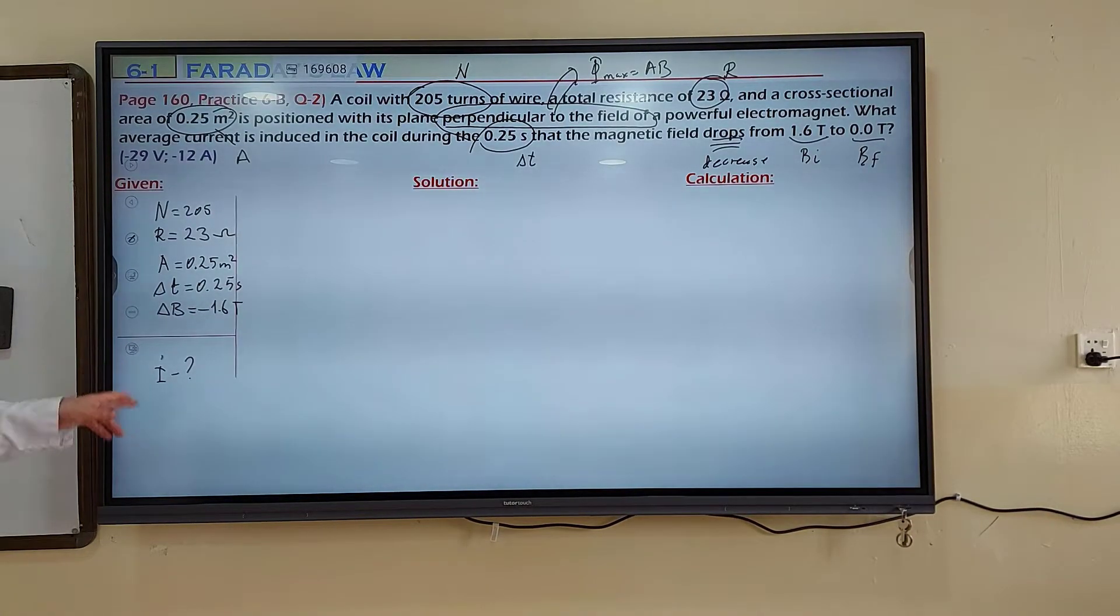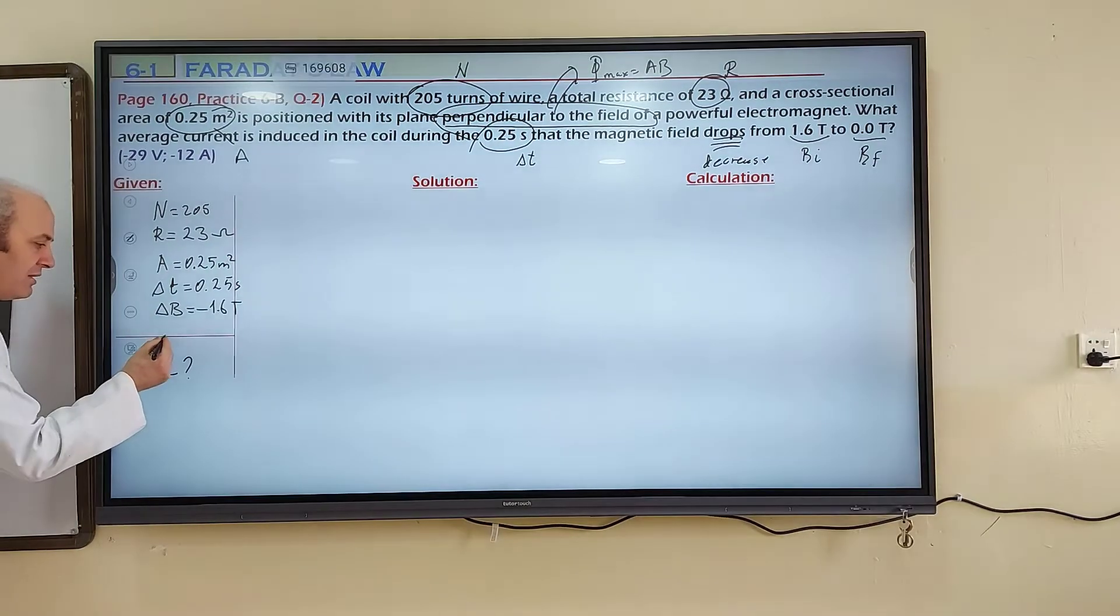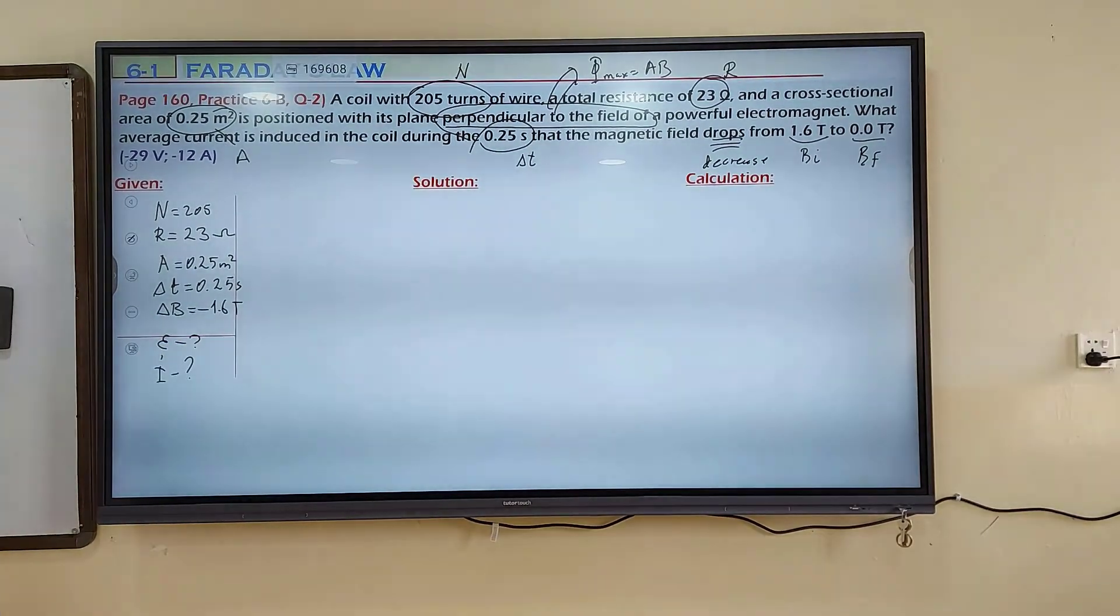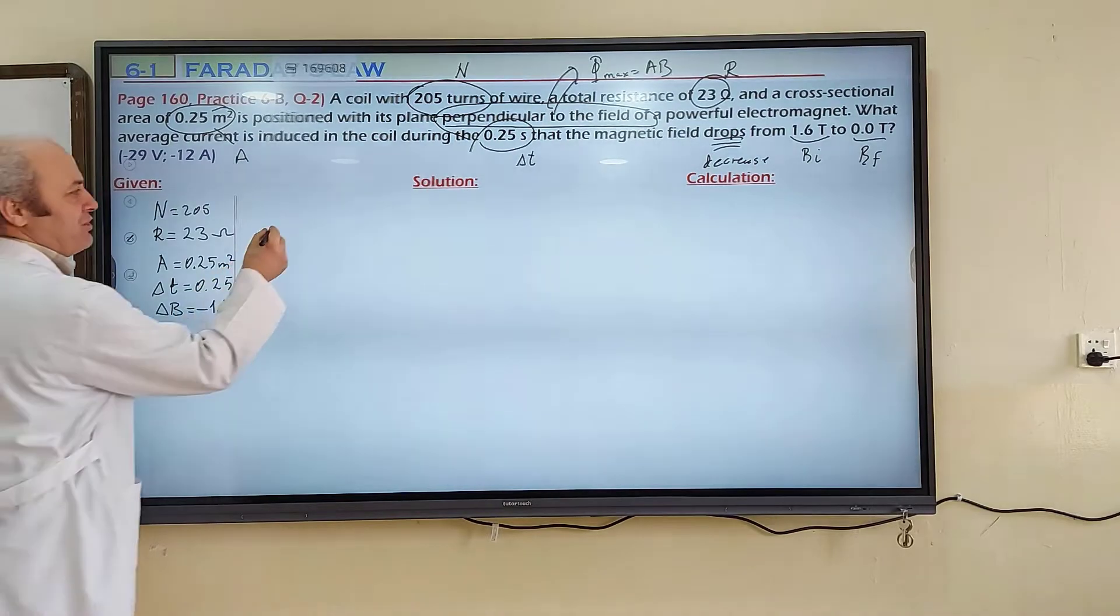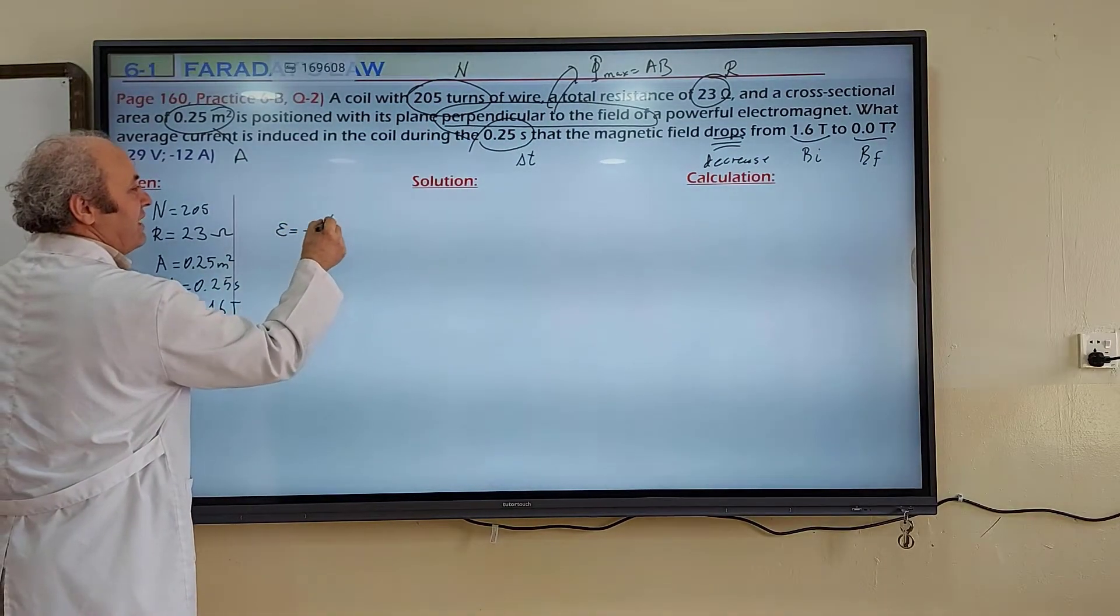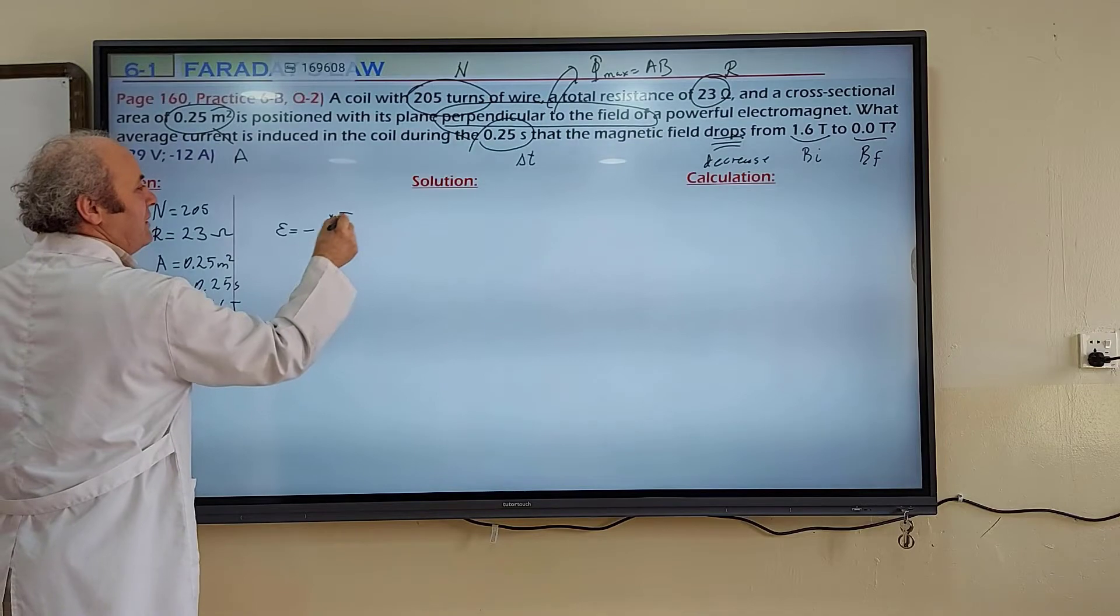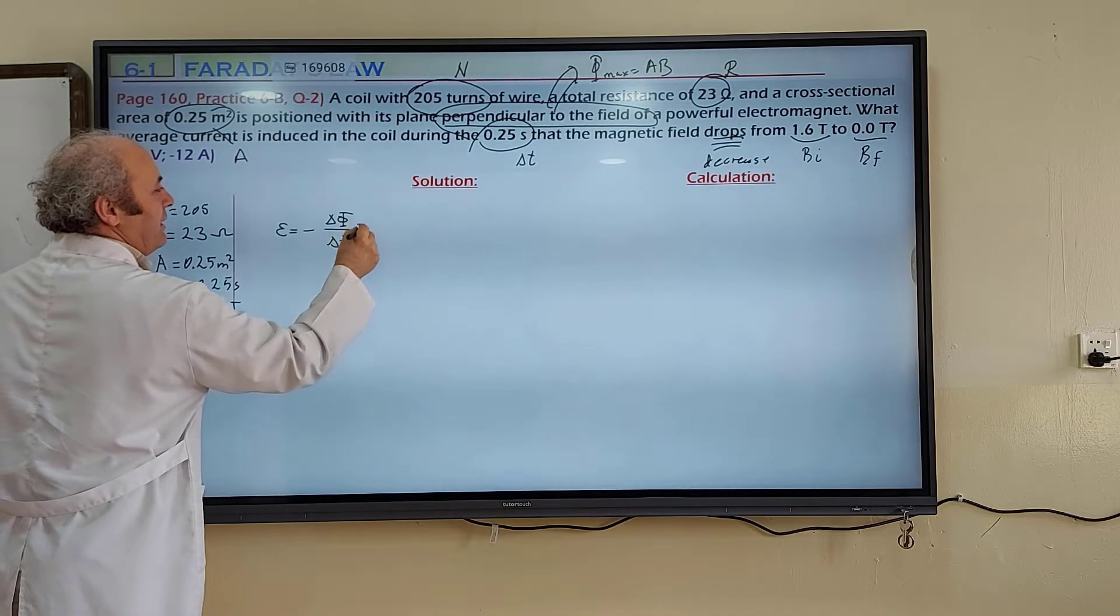Calculate current, but current cannot be calculated directly in this equation. First I will calculate induced EMF. After using Ohm's law, we are going to calculate current. First I should calculate induced EMF, then I have to use Ohm's law for calculating current. Directly you cannot do that. Induced EMF is negative delta phi over delta t multiplied by n.